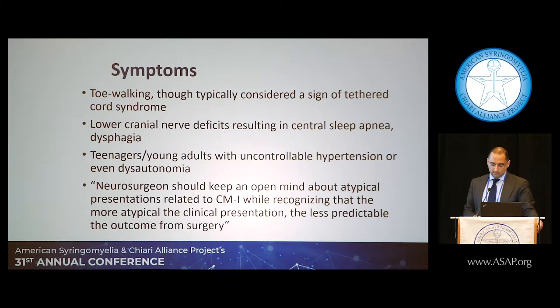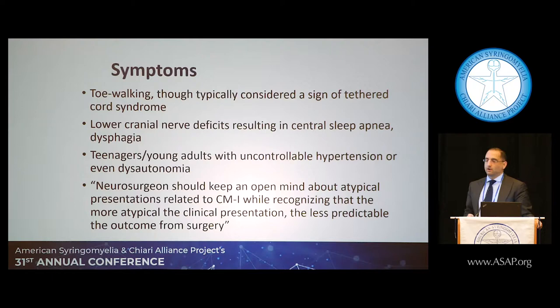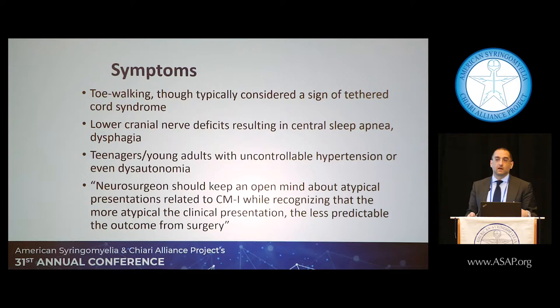Not all symptoms are typical, and the atypical ones are harder to predict. But if you have a whole constellation of typical symptoms plus some atypical ones, you can do surgery and help the typical symptoms — and very often the atypical ones improve too, which is great.